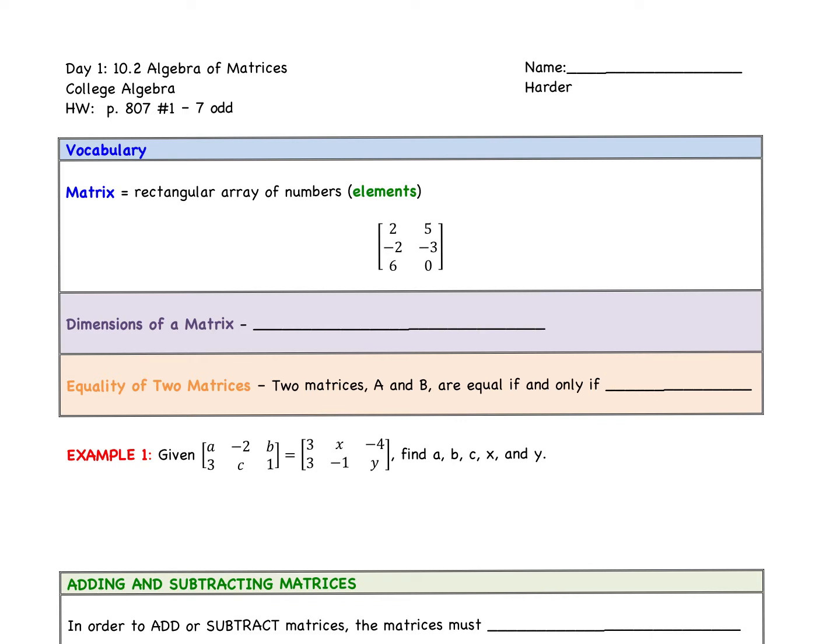Starting with some vocabulary. A matrix is any rectangular array of numbers. And so this example that you see right here, that's a matrix. The plural of that is matrices. So that as a matrix, it's just an arrangement of numbers.